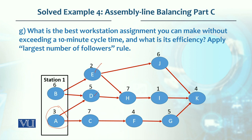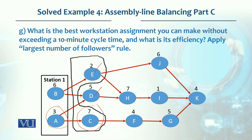Now E, D, and C are available. D has 3 followers, C has 3 followers, and E has only 2. There is a tie between C and D. We assign C first (7 minutes). Then D cannot be added (would make 12 minutes, exceeding 10), so we assign E (2 minutes). Workstation 2 has C and E, total 9 minutes.